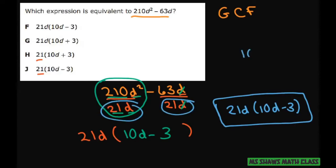If you lost your divisor, you would just get to 10d minus 3. And we don't want that.